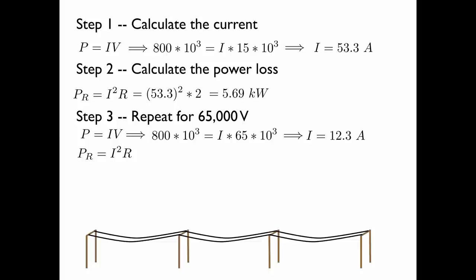Now we find the power loss due to resistive heating. And now notice here that it's I squared R. So the fact that the current has been reduced by increasing the voltage greatly reduces the power loss because current is squared in this equation. We find a power loss of 0.3 kilowatts when we transfer the electricity at the higher voltage.